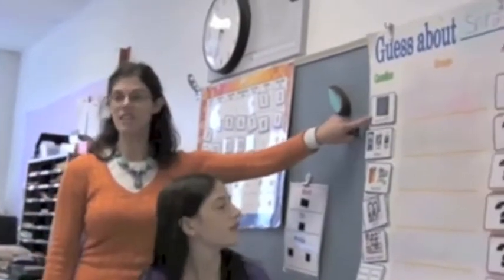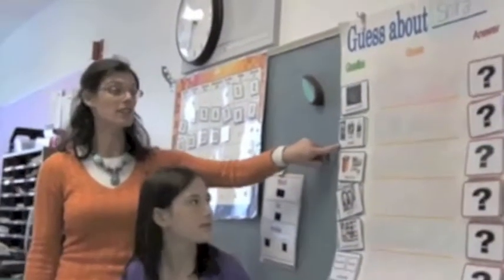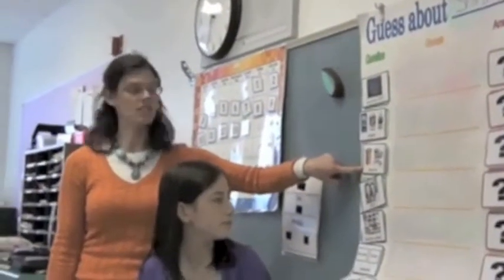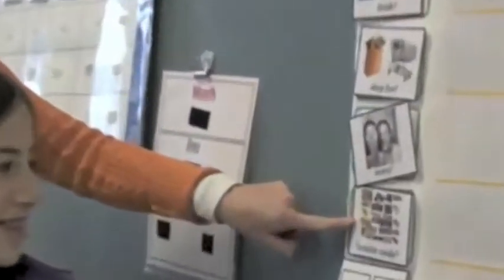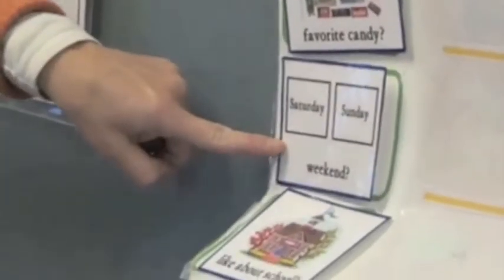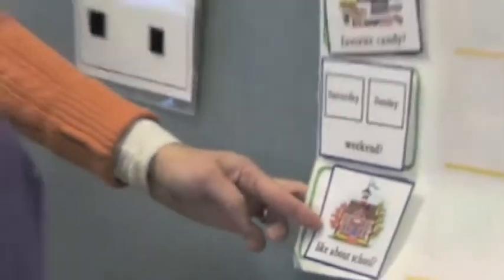So today we're going to play Guess About. We've got Shira that we're guessing about. Categories include: what she likes to watch on TV, her favorite drink, what she likes to shop for, what really scares her, her favorite candy, what she loves to do on the weekend, and what she likes about school.